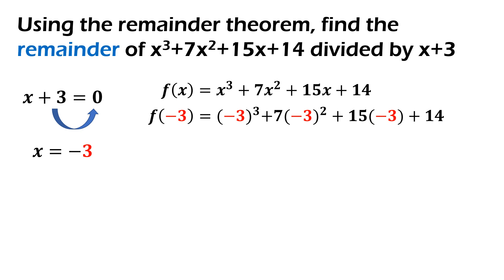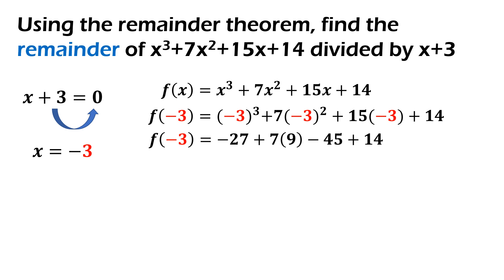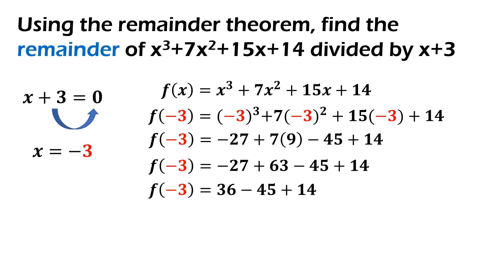So, magiging f of negative 3 is equal to negative 3 cubed plus 7 times negative 3 squared plus 15 times negative 3 plus 14. Lahat muna ng exponents yung isolve natin. Negative 3 cubed will be equal to negative 27. Tapos, yung negative 3 squared will be equal to 9. Sunod na step is, you multiply: 7 times 9 will be equal to 63. Then, negative 27 plus 63 will give us 36, and then minus 45 plus 14.